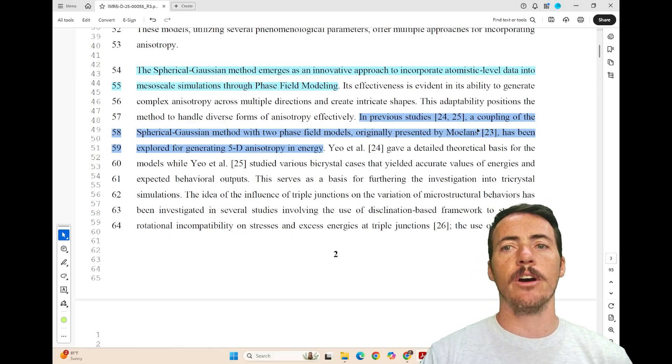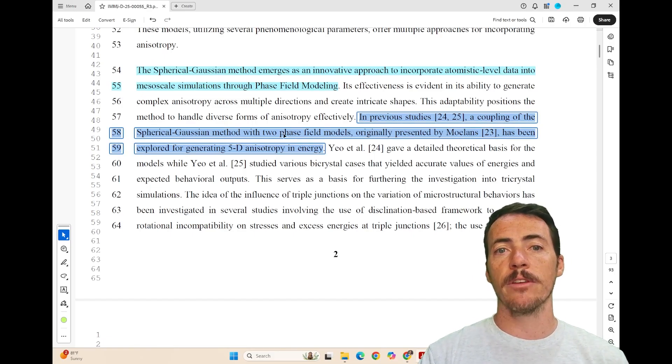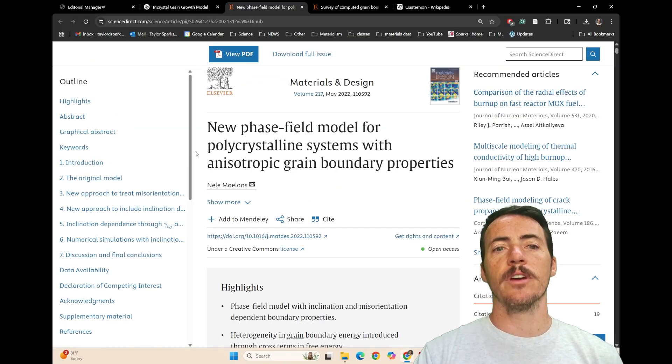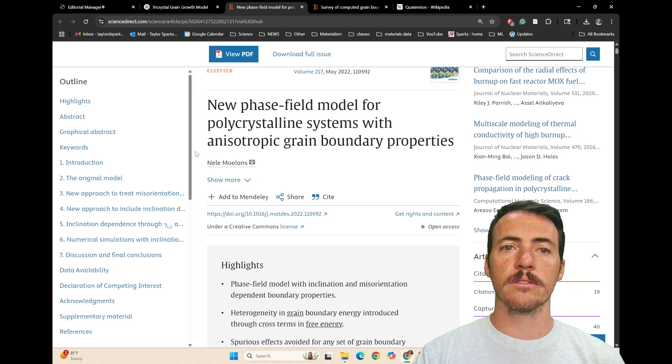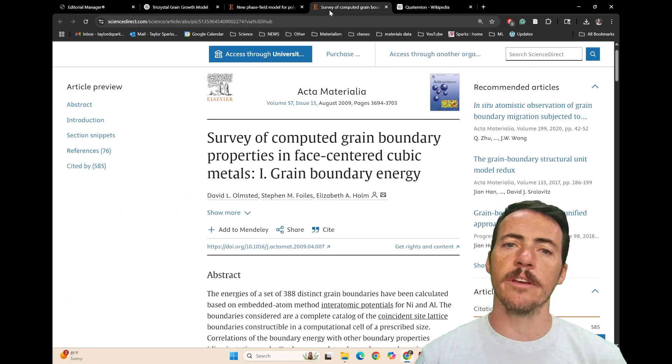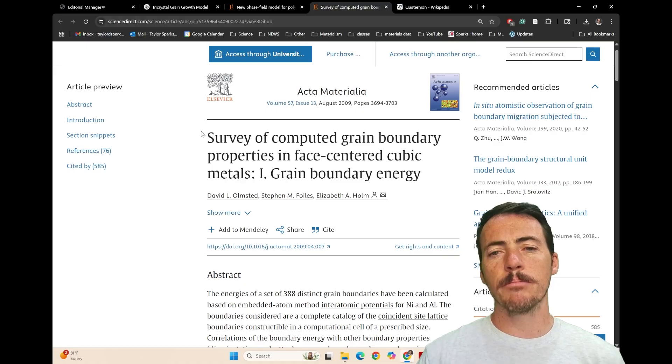First off, this idea of coupling spherical Gaussian method with the two phase field models, that was presented by Molens. That was done in this paper where they introduced the gamma and the epsilon models. There's also this paper by Olmsted which introduced this notion of grain boundary energy and actually provided libraries that are used in this paper.